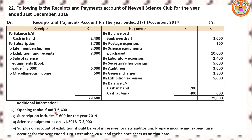Look at the adjustments: opening capital fund — balance sheet liability side. Subscription includes 600 received in advance (next year subscription) — deduct from 8,700: 8,700 minus 600 appears in income and expenditure account; the 600 also appears under liability side as subscription received in advance. Science equipment is an asset — shown under asset side. Surplus on account of exhibition should be kept in reserve for new auditorium. Prepare income and expenditure account for the year ended 31st December 2018 and balance sheet as on that date.